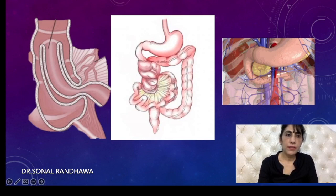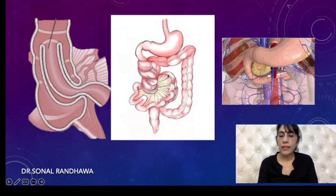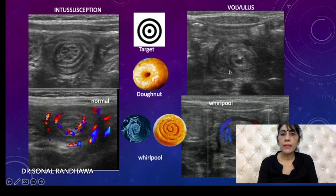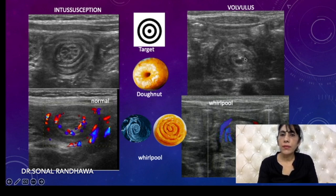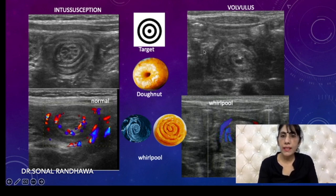When we get a transverse section on grayscale 2D ultrasound of either condition, both are going to look very similar. We call them target lesions or donut sign. However, there is a slight difference: in intussusception the circles look more complete — resembling a target lesion — while in volvulus the circles may look haphazard and irregular, resembling a whirlpool appearance.